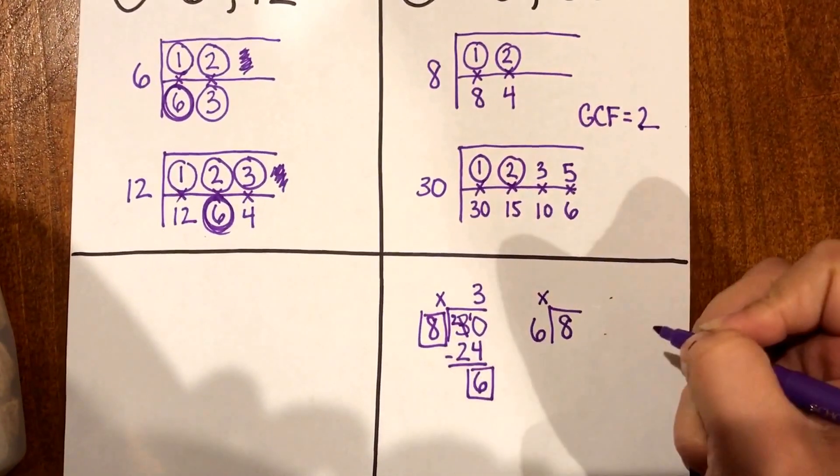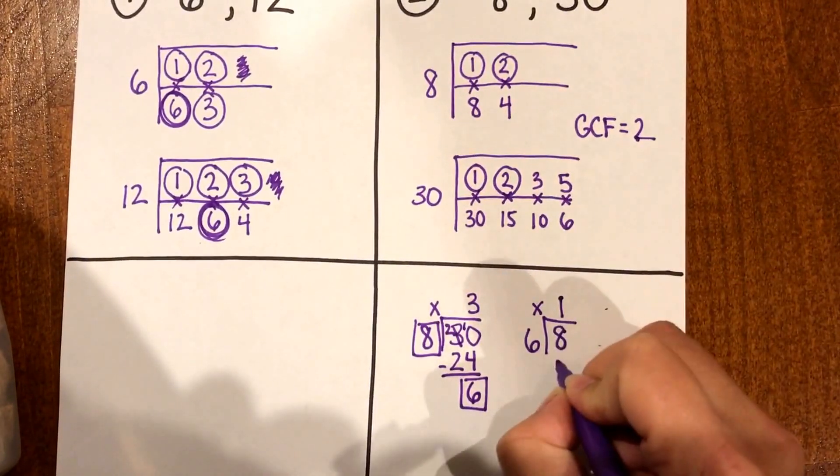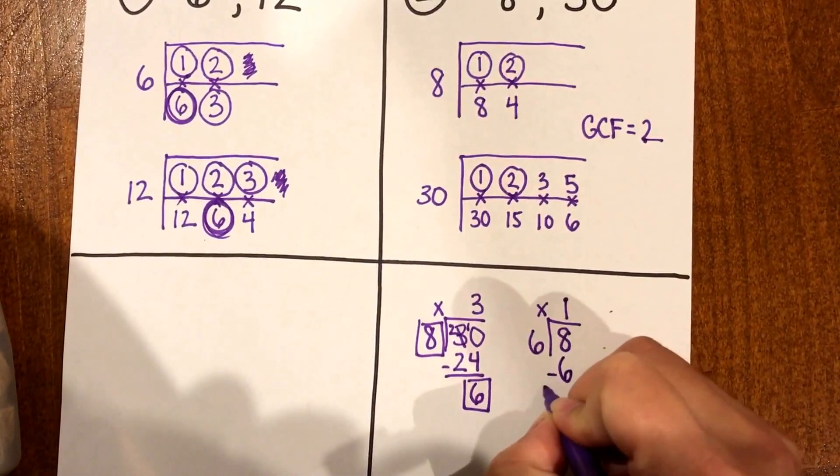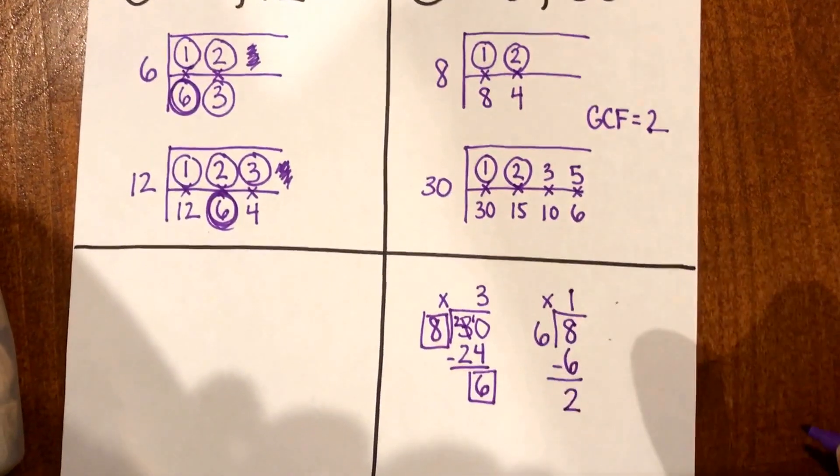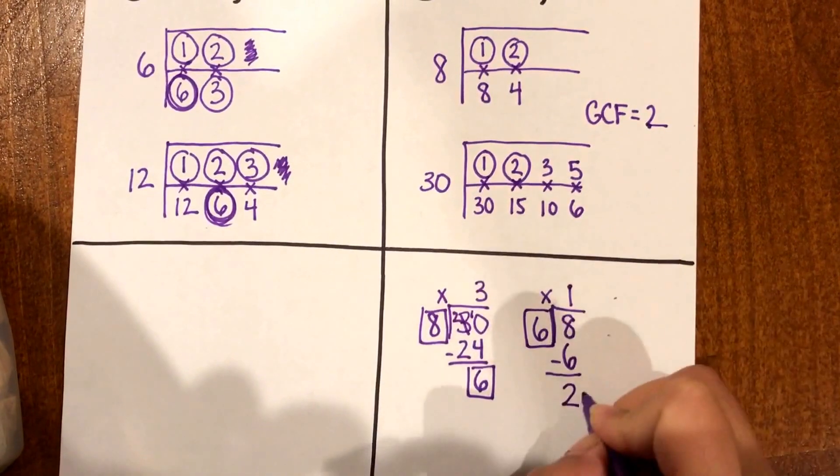So 6 times something is gonna give me close to 8 which I know is 1 and 1 times 6 is 6. If I subtract I have 2 left over.